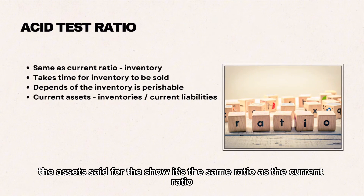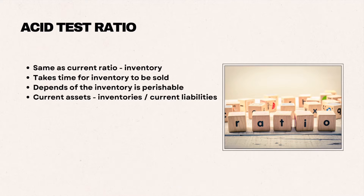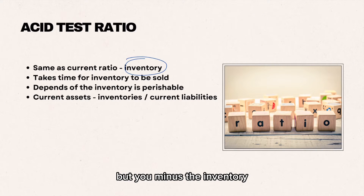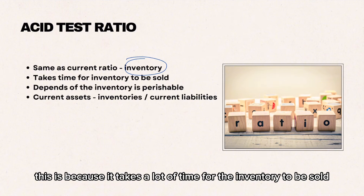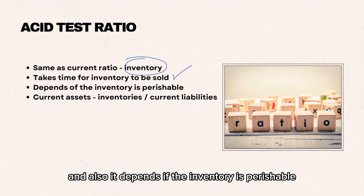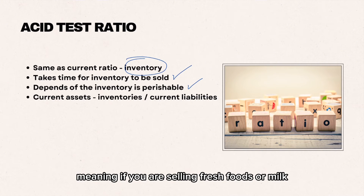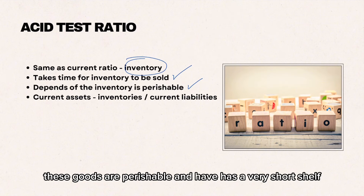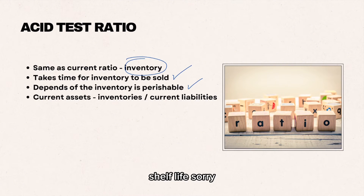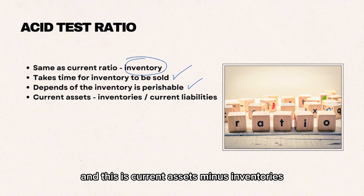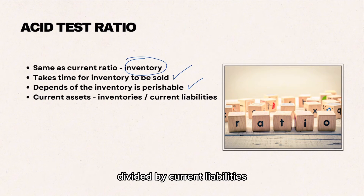The acid test ratio is the same as the current ratio, but you minus the inventory. This is because it takes a lot of time for inventory to be sold, depending on the business, and also it depends if the inventory is perishable — meaning if you are selling fresh foods or milk, these goods have a very short shelf life. The formula is current assets minus inventories divided by current liabilities.